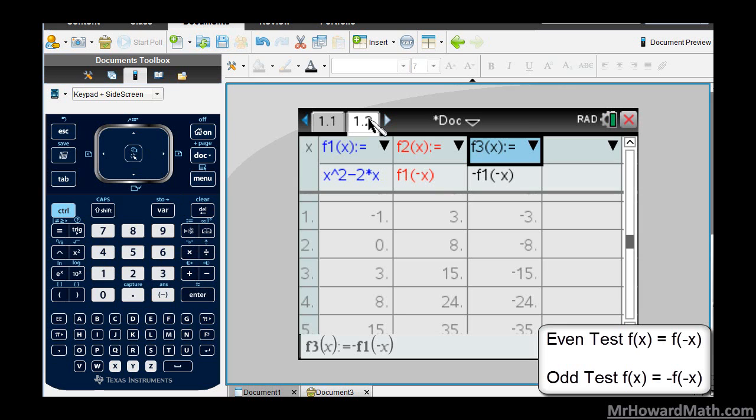I'm going back to my list and spreadsheet here. Here's my original. We have a 3 here as the output for the even test, so it's not even, and a negative 3 here, so it's not odd either, so this one would be neither.